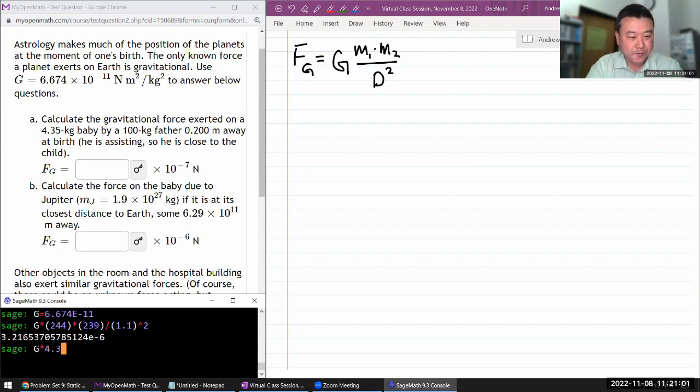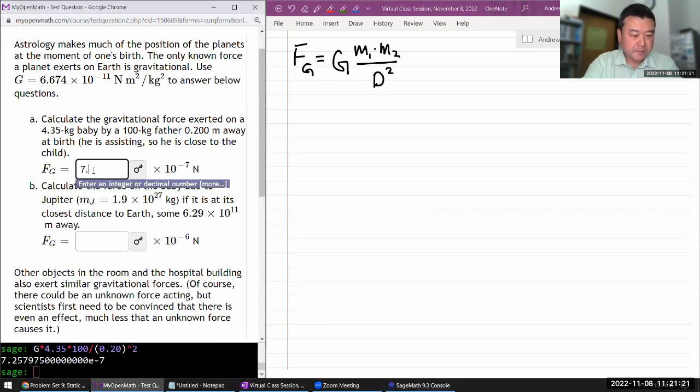G times product of masses, 4.35 times 100, divided by the distance, 0.2 meters squared. And I'm making sure I'm doing everything in basic SI units, so that I don't have to worry about units. Everything will just come out to be newtons, 10 to the minus 7. I already have that here. So it's 7.26 times 10 to the minus 7 newton, or about 0.7 micronewton.